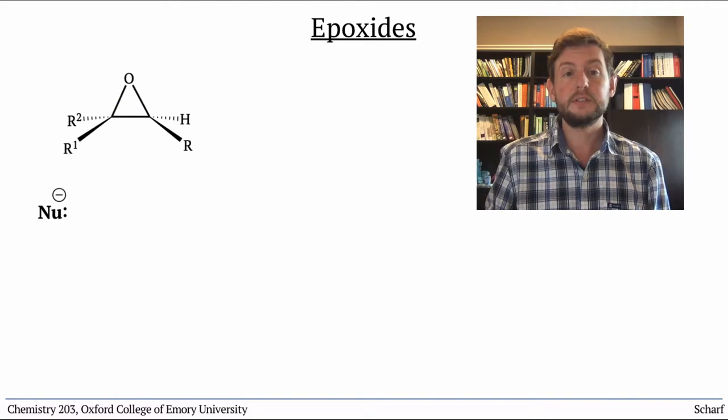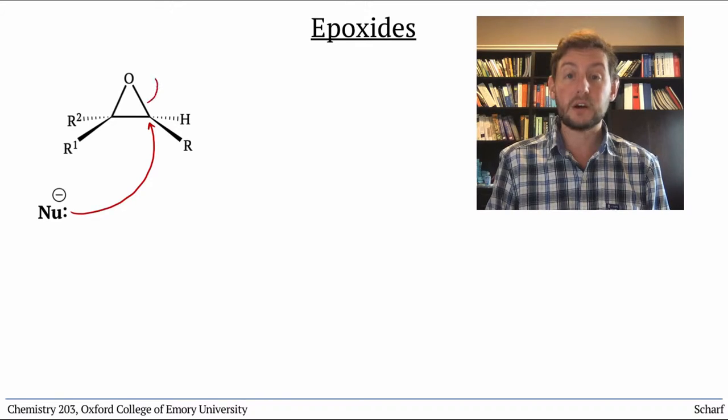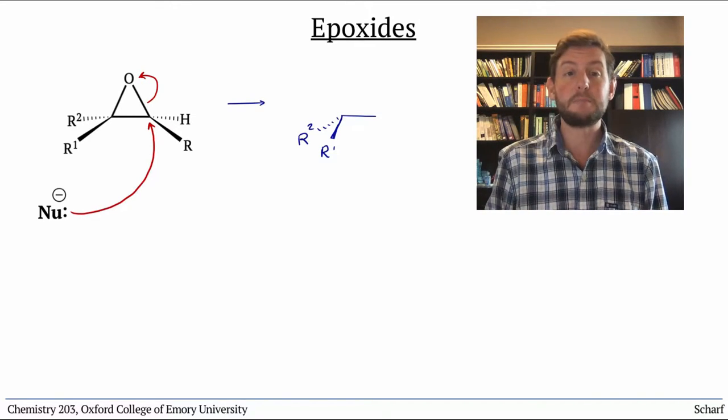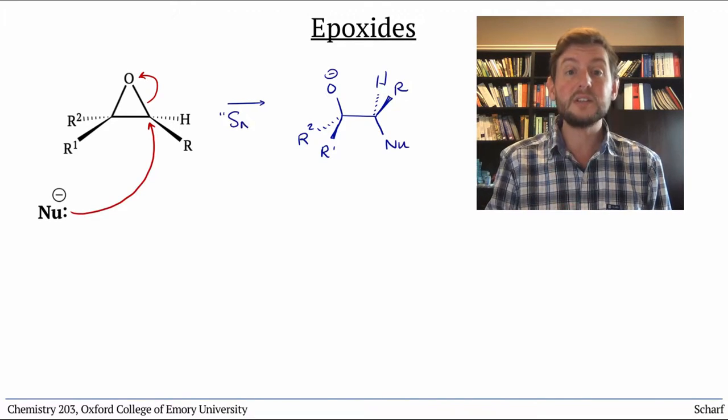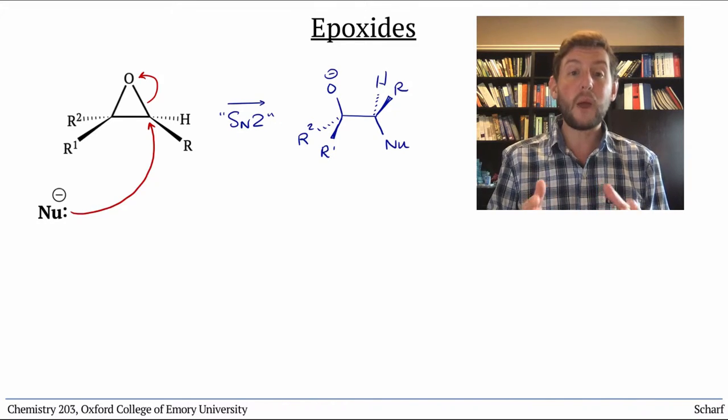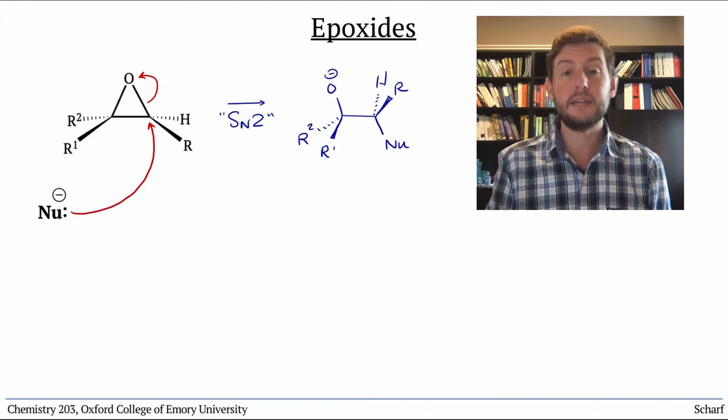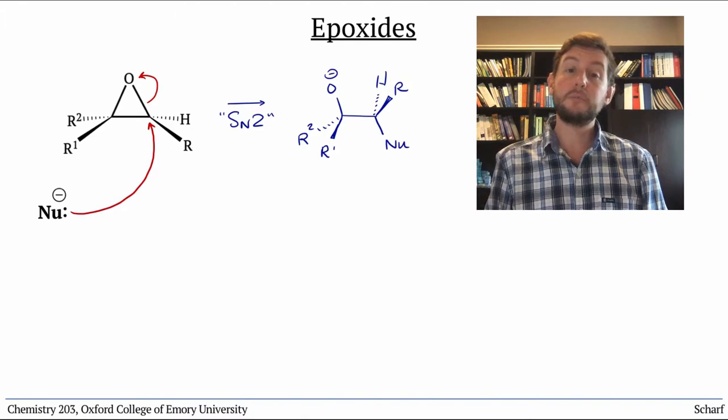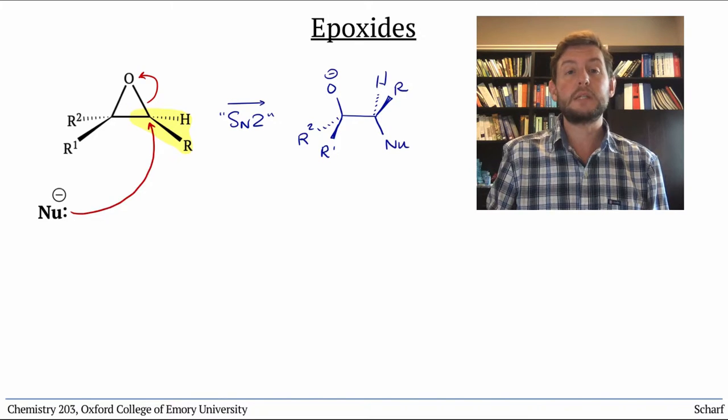Strong nucleophiles open epoxides at the less substituted carbon. This is essentially an SN2 reaction with a special sort of leaving group, an alkoxide, which is only a good leaving group because when it leaves, the ring strain of the epoxide is alleviated. We know that the SN2 reaction is controlled by sterics, so the less sterically encumbered electrophilic site is where the nucleophile will attack.